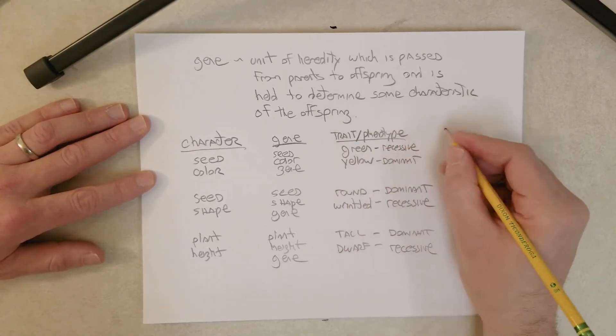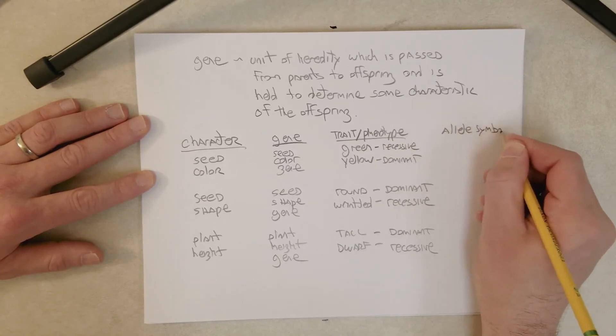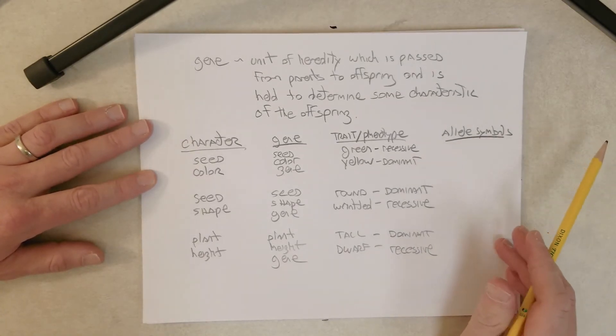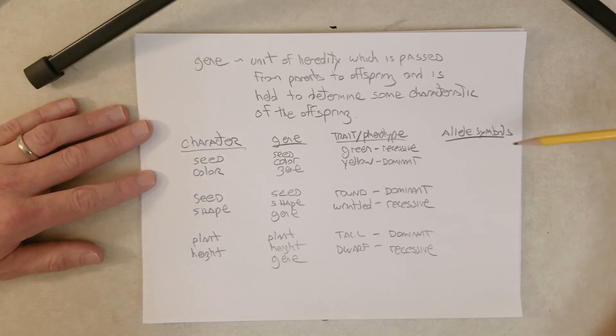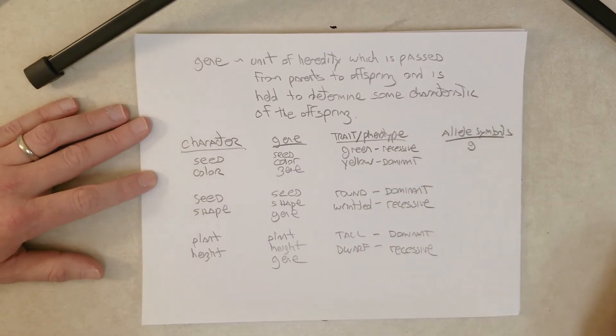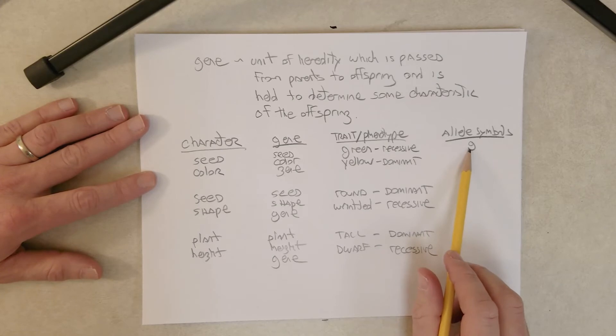So now, we need allele symbols. And so what alleles are, is they are different versions of the same gene. And they may differ by one base pair or one nucleotide. We'll get to that again when we get to the molecular part of the course. For now, just know that alleles are different versions of the same gene. And we're going to use this certain method for symbolizing alleles at this part in the course based on the recessive phenotype. So here we have the recessive phenotype is green.